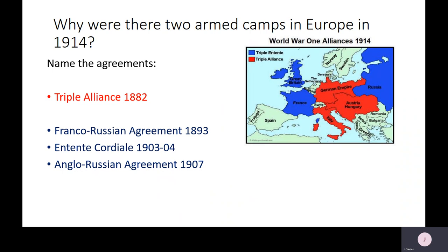The Franco-Russian agreement was then signed in 1893. Again, this is all part of that aftermath of the Franco-Prussian War. France feared further German attacks in the future, and therefore this was the culmination of a long-standing French policy to try to develop an ally on the other side of Germany, thus putting Germany in a very difficult position should war break out.